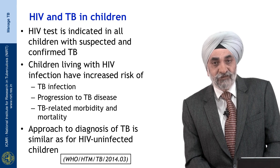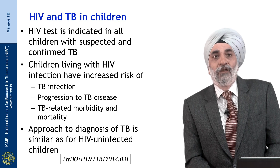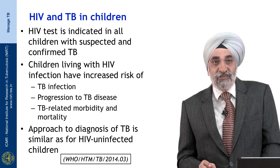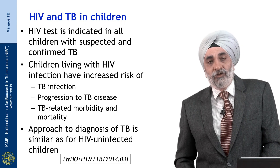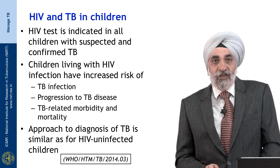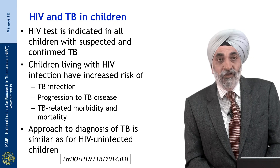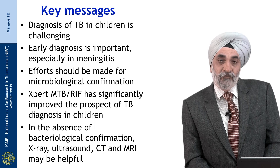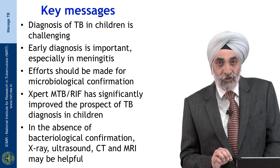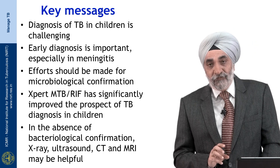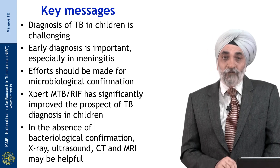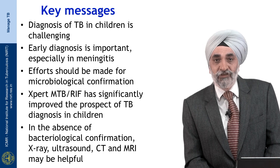The other important comorbidity is HIV-TB in children. HIV testing is indicated — and is national policy — in all children with suspected or confirmed TB. Children living with HIV have a higher risk of TB infection, higher risk of progression from infection to TB disease, and higher TB-related morbidity and mortality. Therefore, TB must be looked for as a comorbidity in children with HIV disease. The approach to TB diagnosis in HIV-positive children remains quite similar to the approach described earlier.